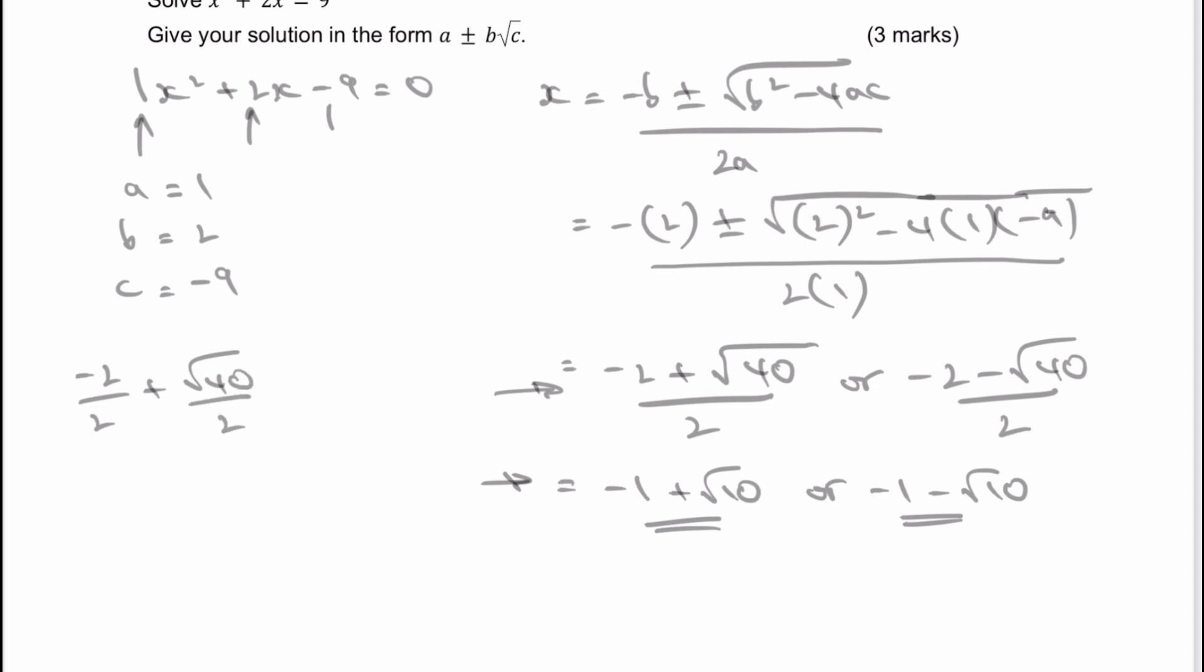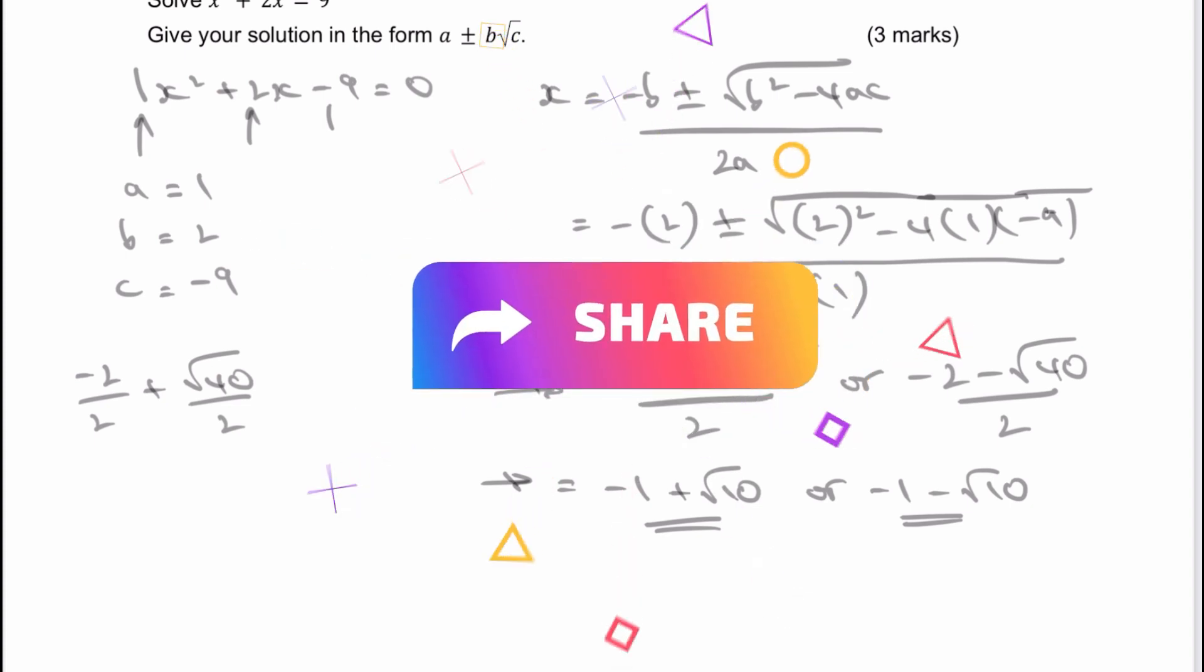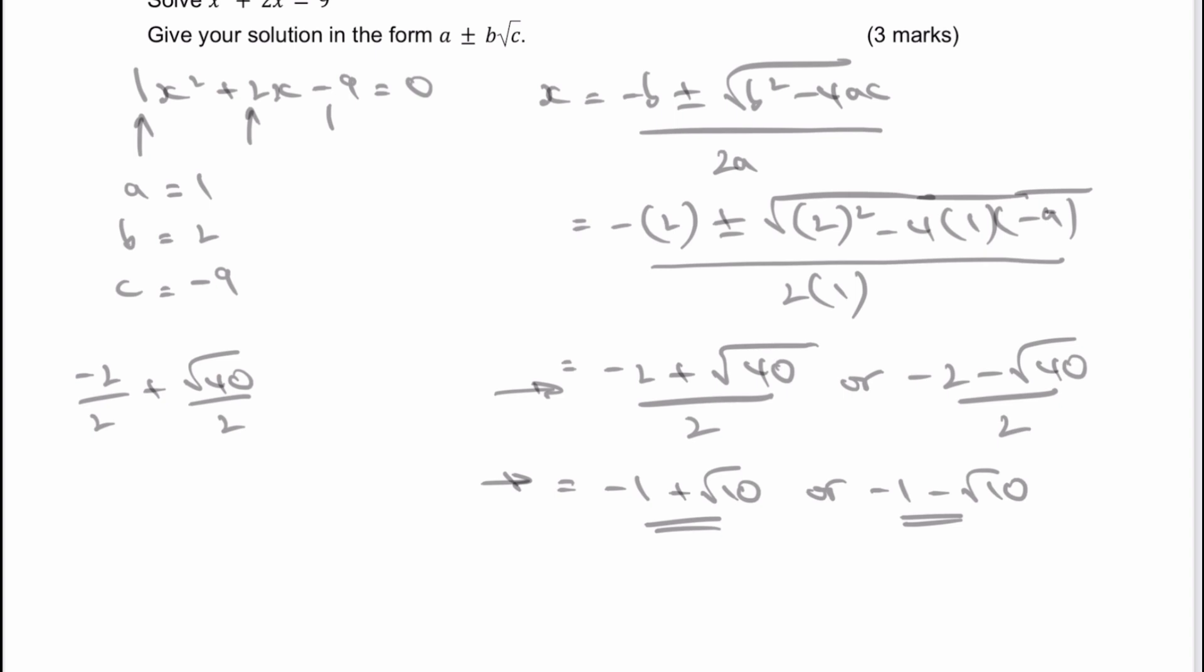Okay, now the root of 40 can be written as the root of 4 multiplied by the root of 10. Okay, so let's just tie this up again. I've got -2 divided by 2. Well, that's going to be -1, so that becomes -1.